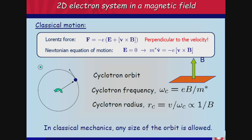Let's take a classical electron in a magnetic field. We have a magnetic field, we shoot an electron with velocity V, and there is a Lorentz force. When the electric field is zero, the equation of motion gives acceleration perpendicular to both velocity and magnetic field — so the motion is in a circle: a cyclotron orbit. The cyclotron frequency is proportional to the magnetic field and inversely proportional to the mass m* (using a star because we're preparing to put this on a lattice). The cyclotron radius is inversely proportional to the magnetic field.